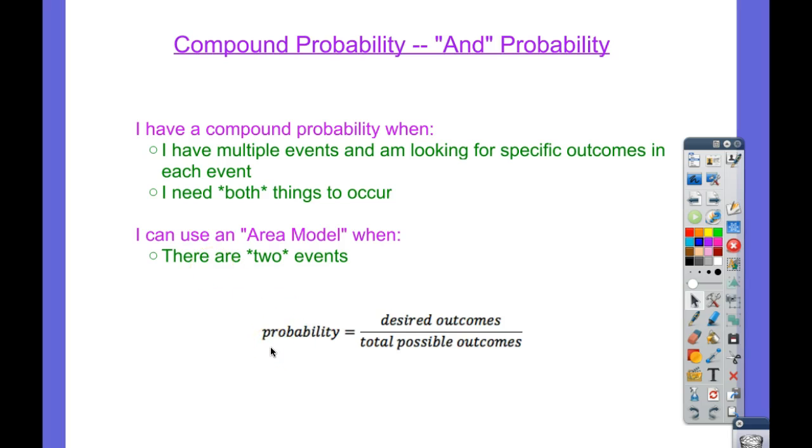That complicates things a little bit more because I don't know how many different ways I can get the desired outcome to happen. And it's even harder to know what the total possible outcomes are. So how are we going to figure that out?